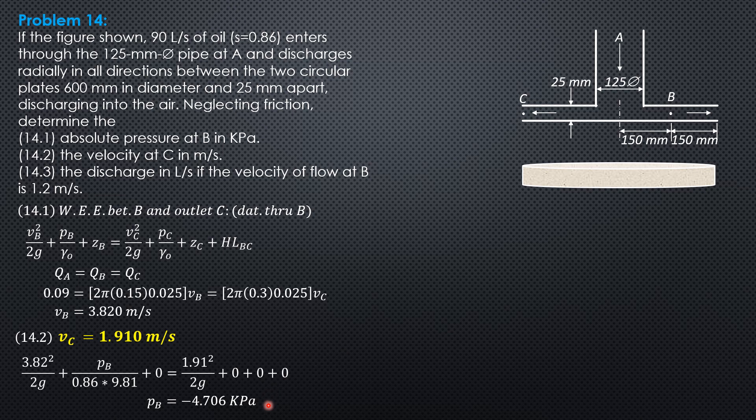Having found the gauge pressure at B, we add 101.3 kilopascals atmospheric pressure to compute the absolute pressure at B. Negative 4.706 plus 101.3 gives an absolute pressure at B of 96.59 kilopascals.